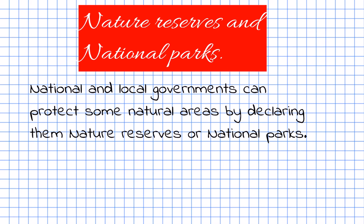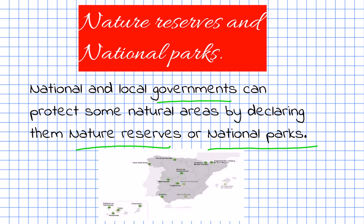Finally, we have to talk about nature reserves and national parks. National and local governments can protect some natural areas by declaring them nature reserves or national parks. Here you are a map of Spain with our national parks. Some examples are Doñana or Montfrague.